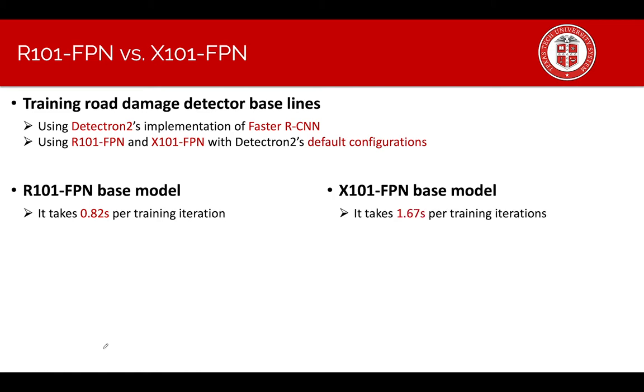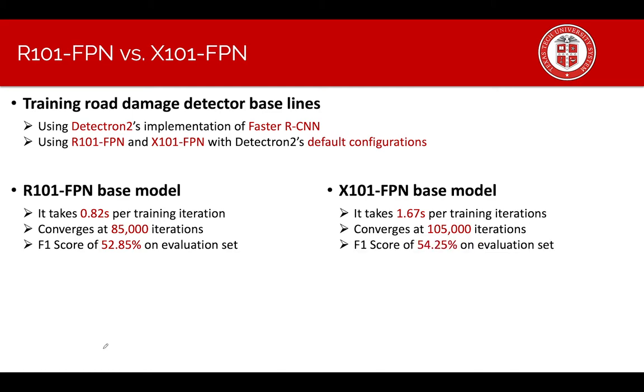It takes double the time for training for X101. It converges at 85,000 while it takes longer to converge for X101. The F1 score that we have is 52.85 on the evaluation side versus 54.25 for X101. Therefore we decided to stick with X101 for further experiments because we cannot experiment both of these for many future experiments.